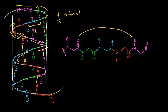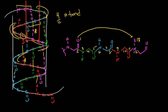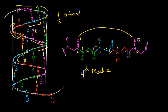What we end up seeing is that this actually ends up being a ring of 13 atoms. Starting with your oxygen: 1, 2, 3, 4, 5, 6, 7, 8, 9, 10, 11, 12, and the hydrogen makes 13. So this hydrogen bond between this carbonyl and the fourth residue nitrogen actually ends up forming a ring of 13 atoms. The key numbers to remember here are every fourth residue, and the ring formed ends up being 13 atoms, closed by a hydrogen bond.